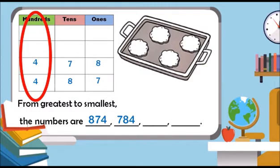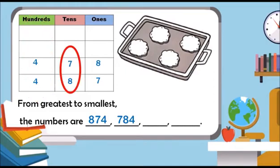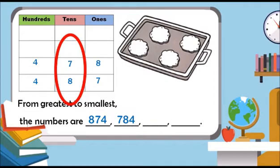Since the hundreds are equal, let us compare the tens. Eight tens is greater than seven tens. So, four hundred and eighty-seven is the next. The smallest number is four hundred and seventy-eight.